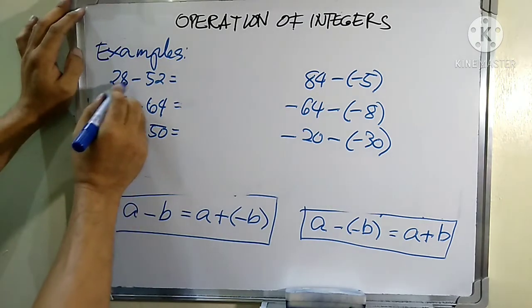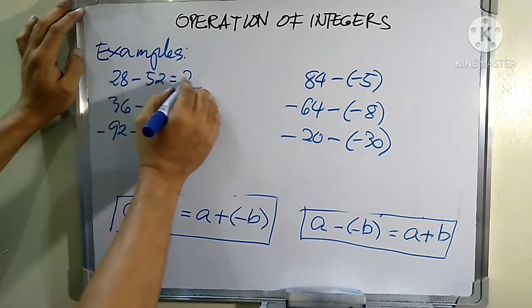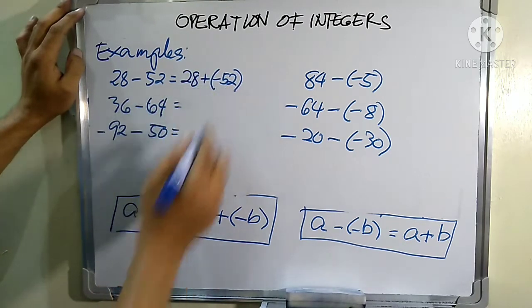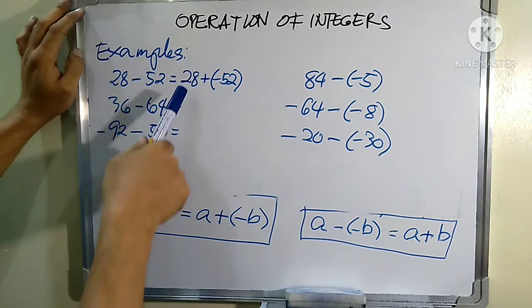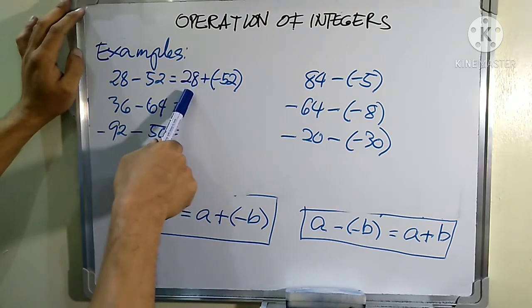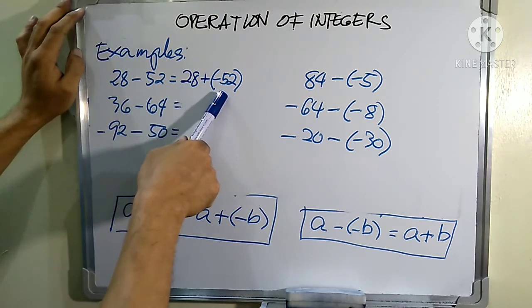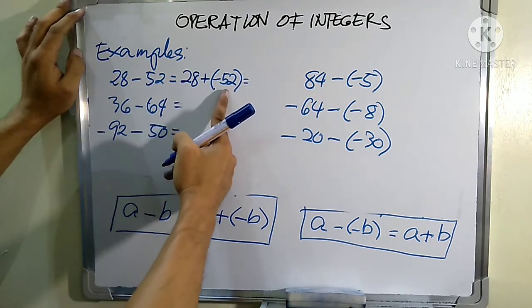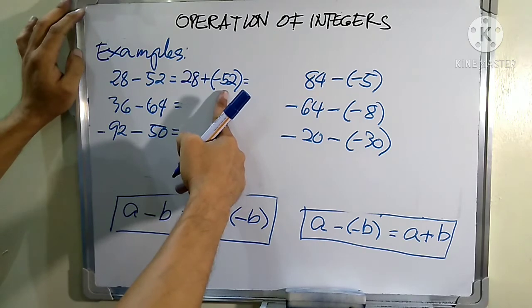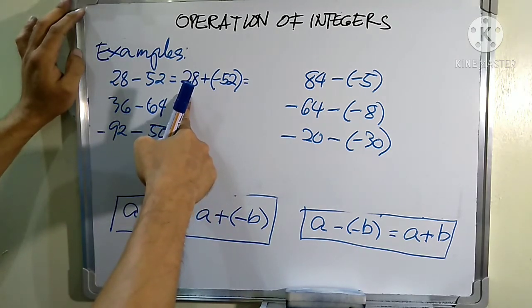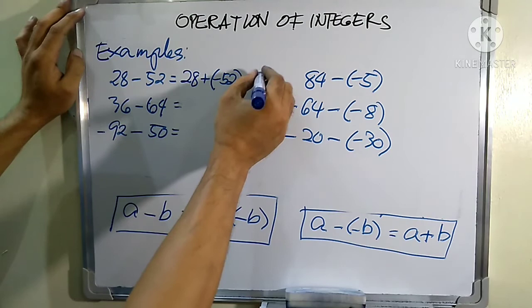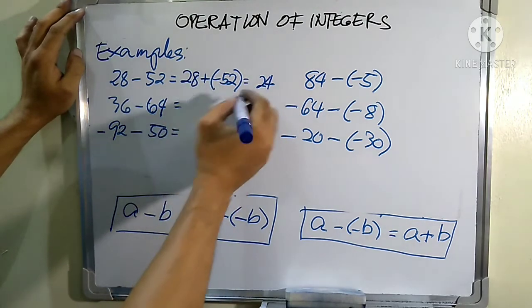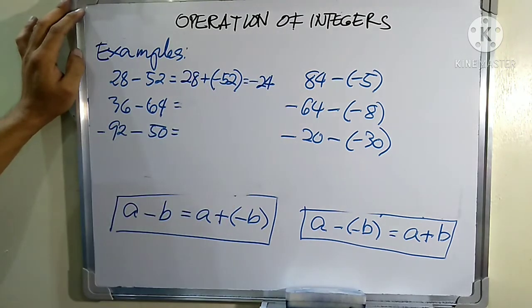Let us answer this: 28 minus 52. We rewrite it as 28 plus negative 52. These numbers have different signs, so we get the difference. The absolute value of negative 52 is 52, so we compute 52 minus 28, which gives 24. Since 52 is farther from zero, the answer is negative 24.